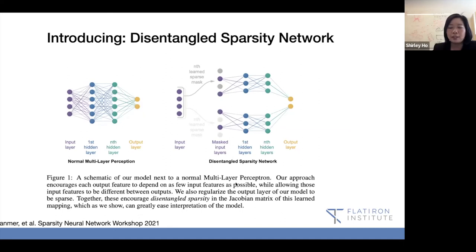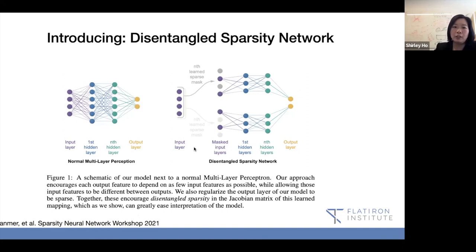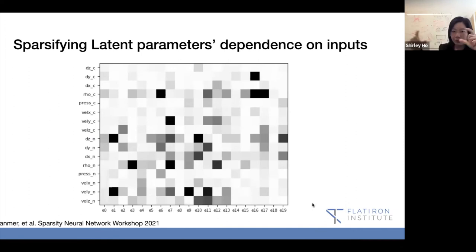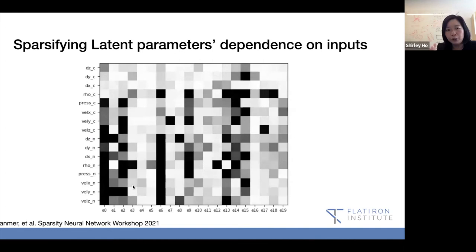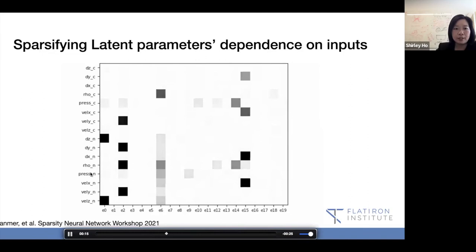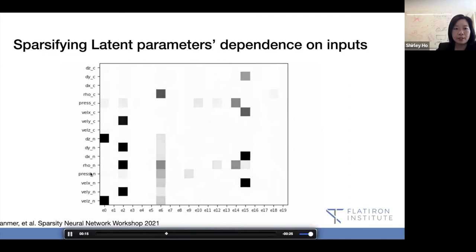We came up with a new way of doing multilayer perceptron. We call this disentangle sparsity network where you encourage each output feature to depend on as few input features as possible. And that helps a lot. Here we're showing on the y-axis the input feature. These are the latent parameters in the edge vector. You can see that these output parameters, when you train, once you do this disentangle sparsity network, it will push it to have each of these elements to depend on as few inputs as possible.